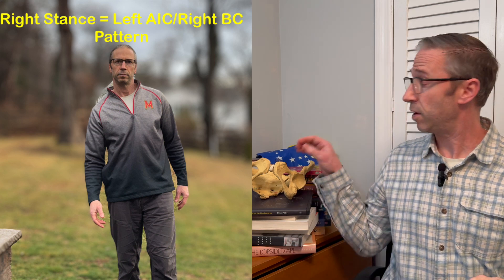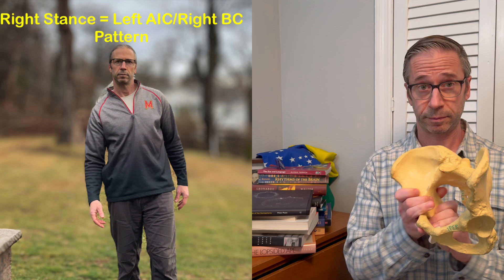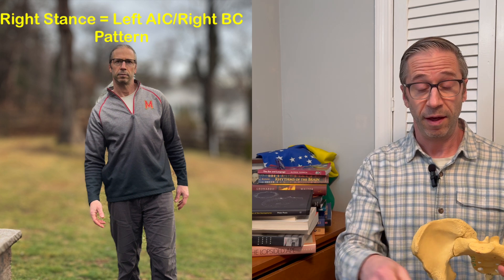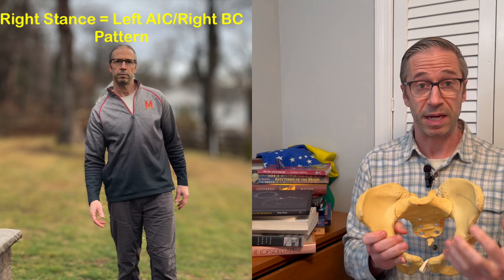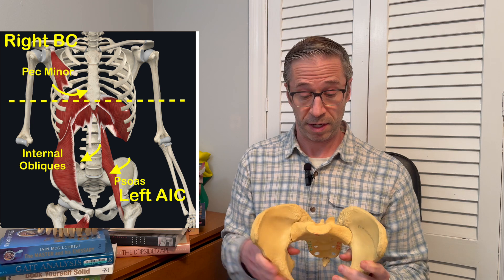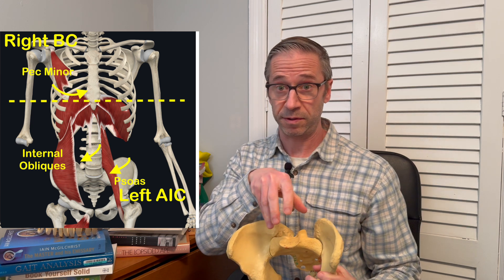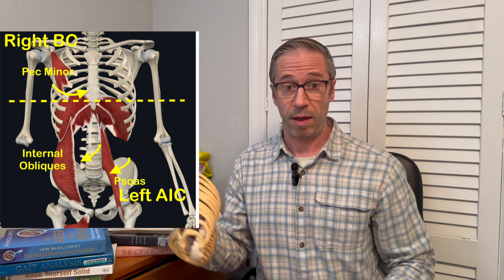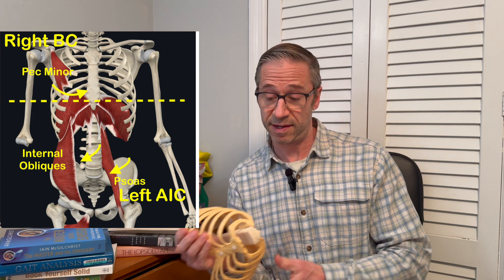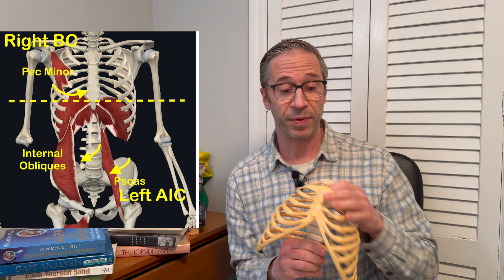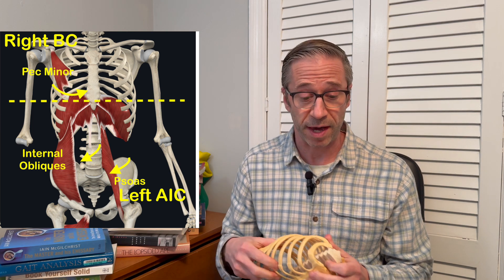You're over on your right, which also means the pelvis is over on the right. When you see the left AIC pattern, the main muscle contributing to it is the left psoas muscle — it brings the pelvis forward on the left, the lumbar spine rotates to the right, body weight shifts to the right. We get tight through the right side and then have to twist back to the left to stay straight. That's what establishes the left AIC, right BC pattern.